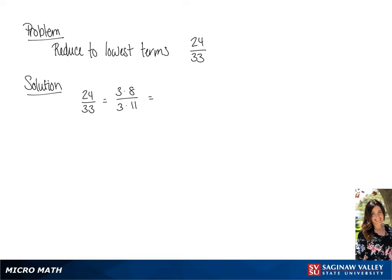We will rewrite this as 3 over 3 times 8 over 11. And since we know that 3 over 3 is equal to 1, we get the answer of 8 over 11.